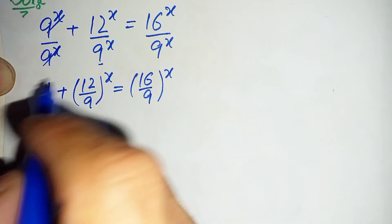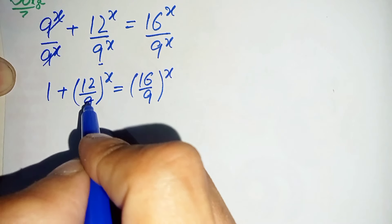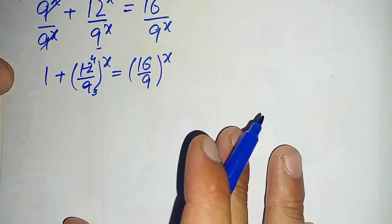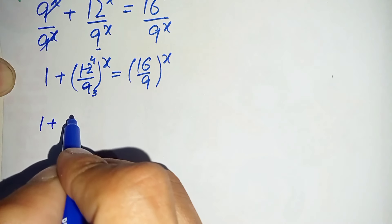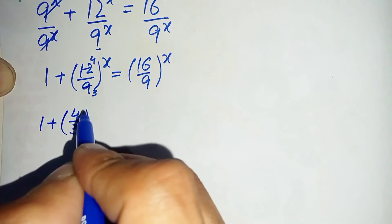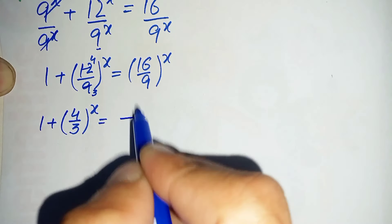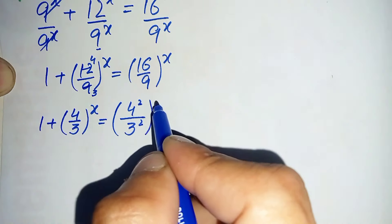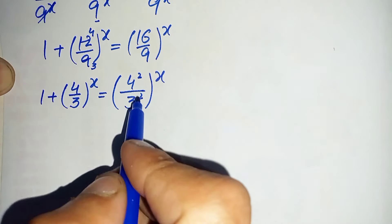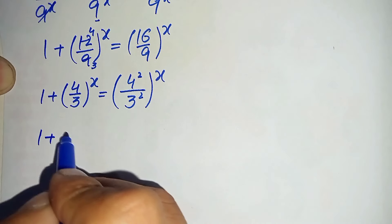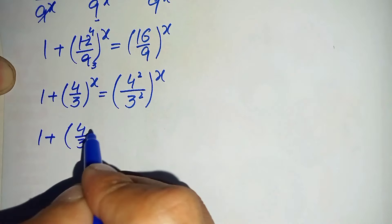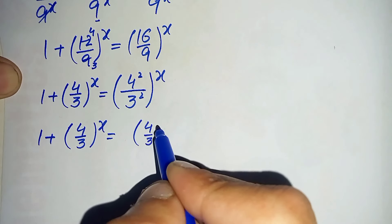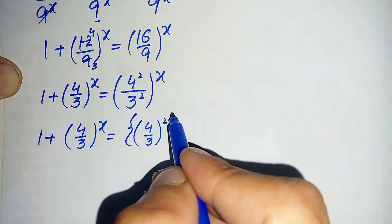So we will simplify these two numbers. 12 and 9 are both divisible by 3: 3 times 3 is 9 and 3 times 4 is 12. We will also change these numbers to square form. So this will become 1 plus (4/3)^x is equal to (4²/3²)^x, that is (4/3) squared raised to power x.